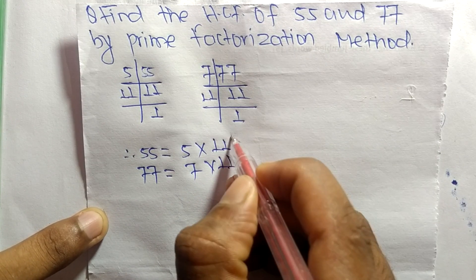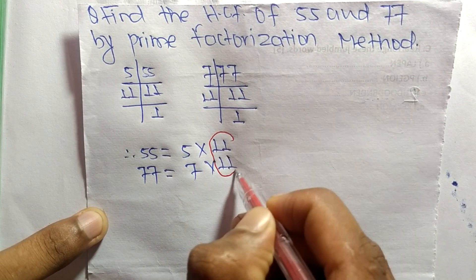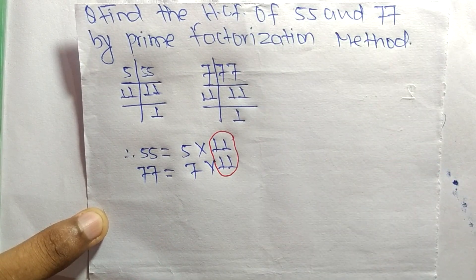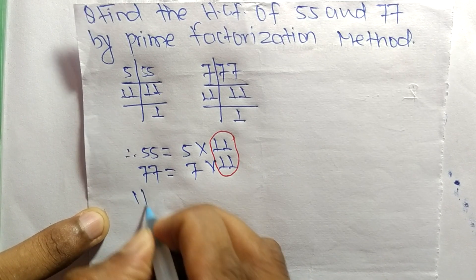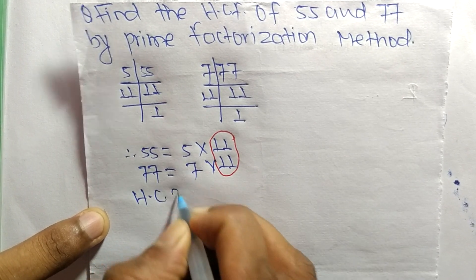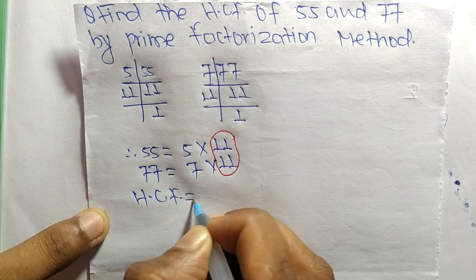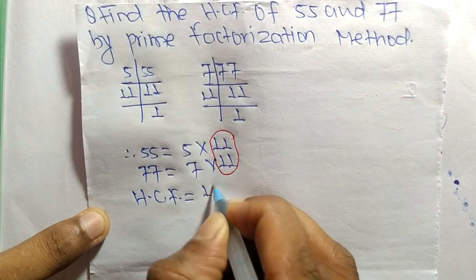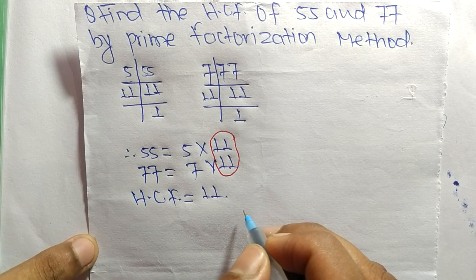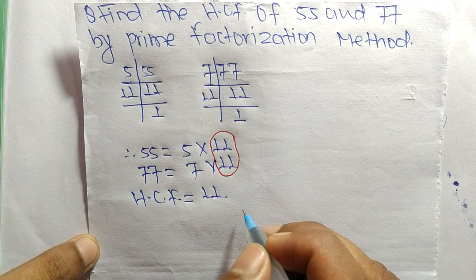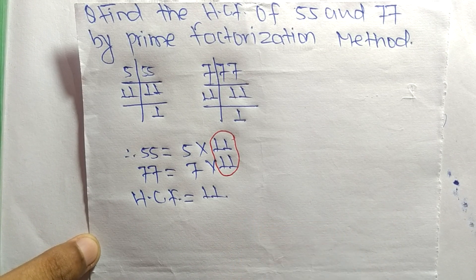The common factor here is 11, so the HCF is equal to 11. That's all for today — thanks for watching.